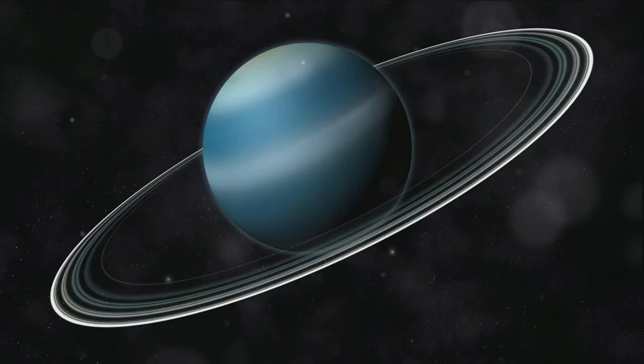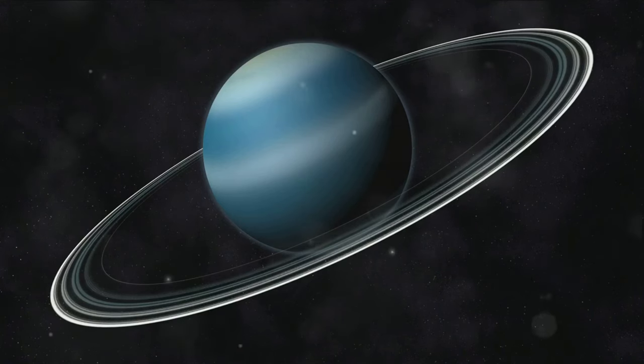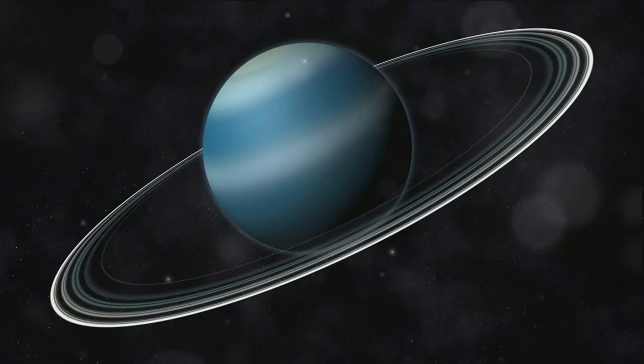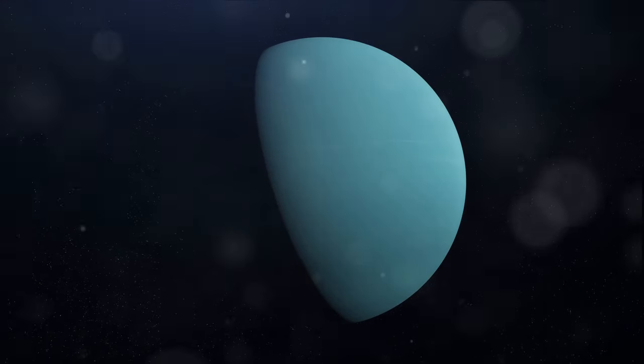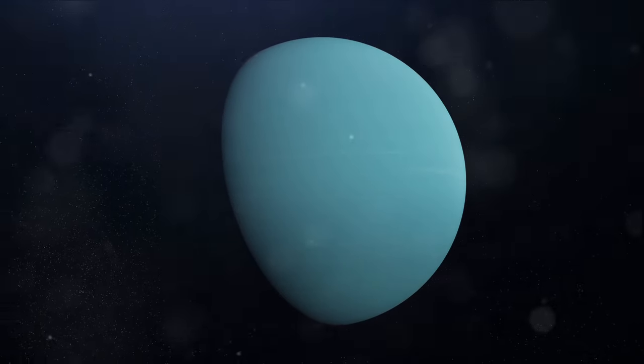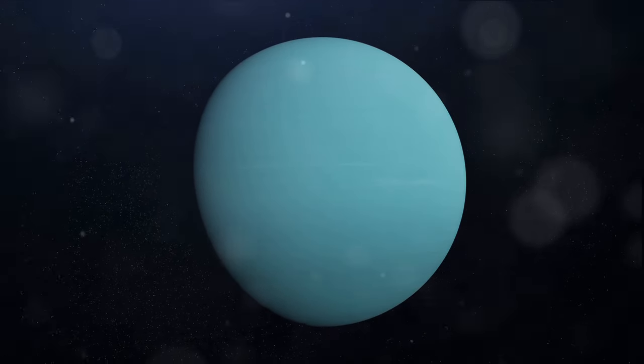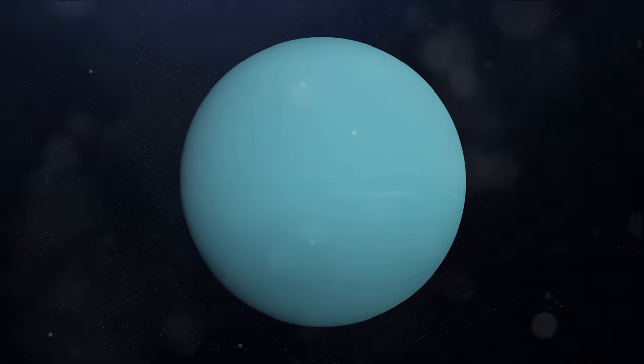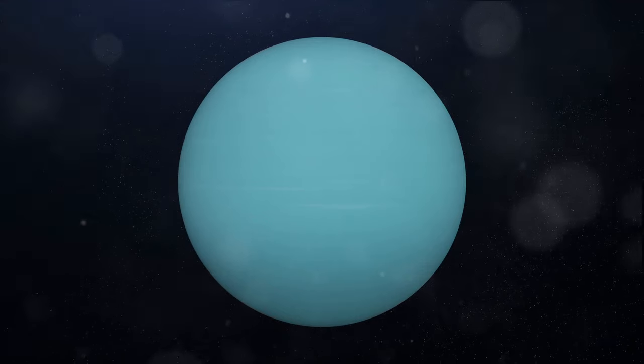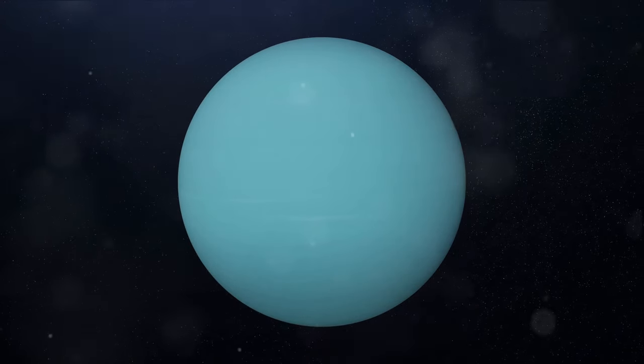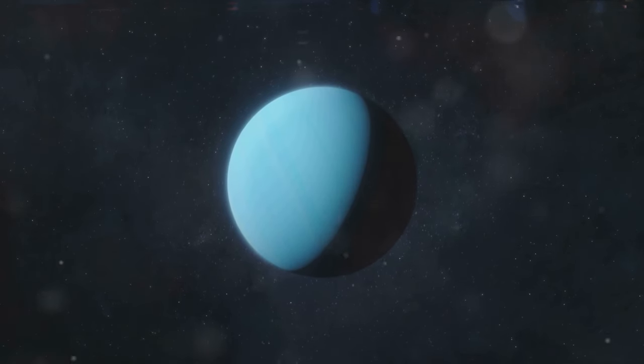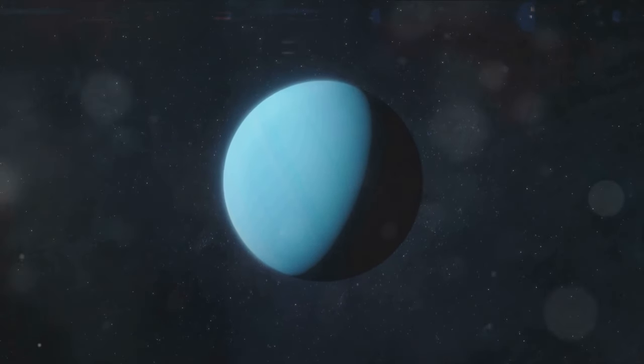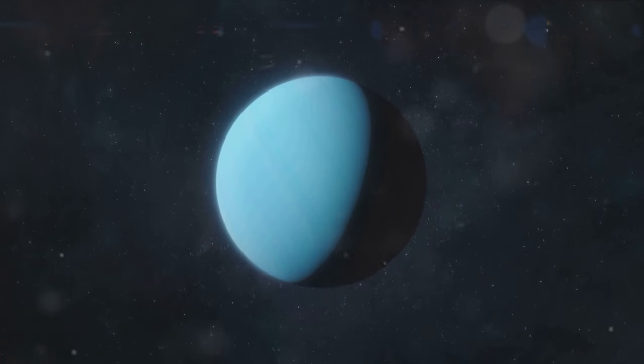Its unique inclination gives it extreme seasons that last for nearly 21 years. Imagine a summer or a winter that lasts for two decades. This is the reality on Uranus. Its peculiar rotation isn't the only thing that makes Uranus special. Its composition is another source of fascination. It is deemed an ice giant due to the significant amount of water, ammonia and methane ice in its atmosphere. These ices give Uranus its unique blue-green coloration.